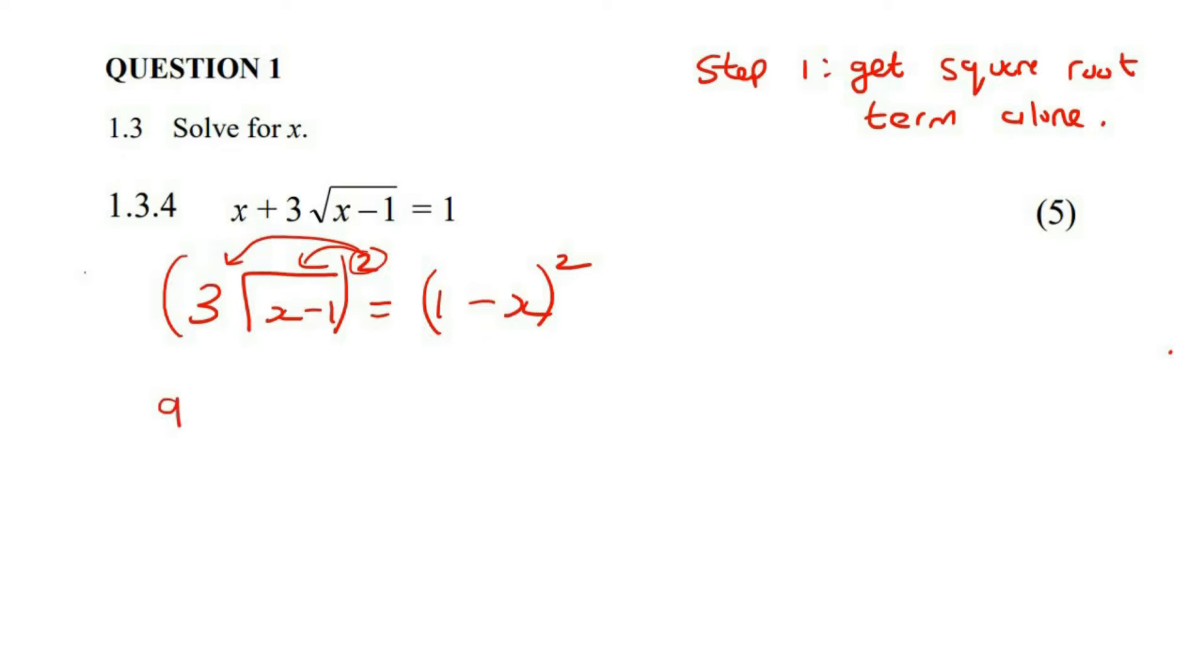So it becomes nine and then this two evaporates, I like that, evaporates the square root. And so that becomes x minus one.